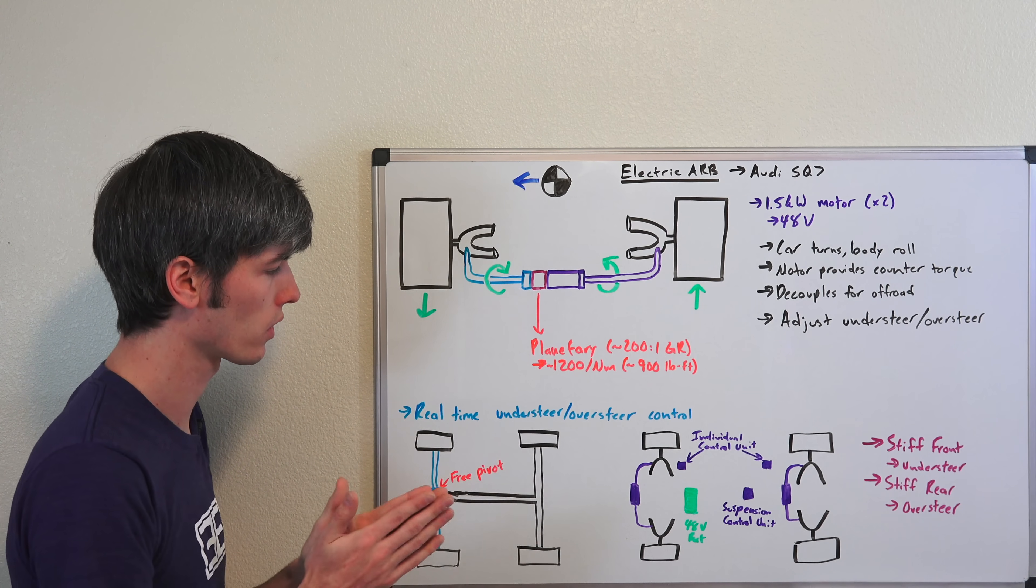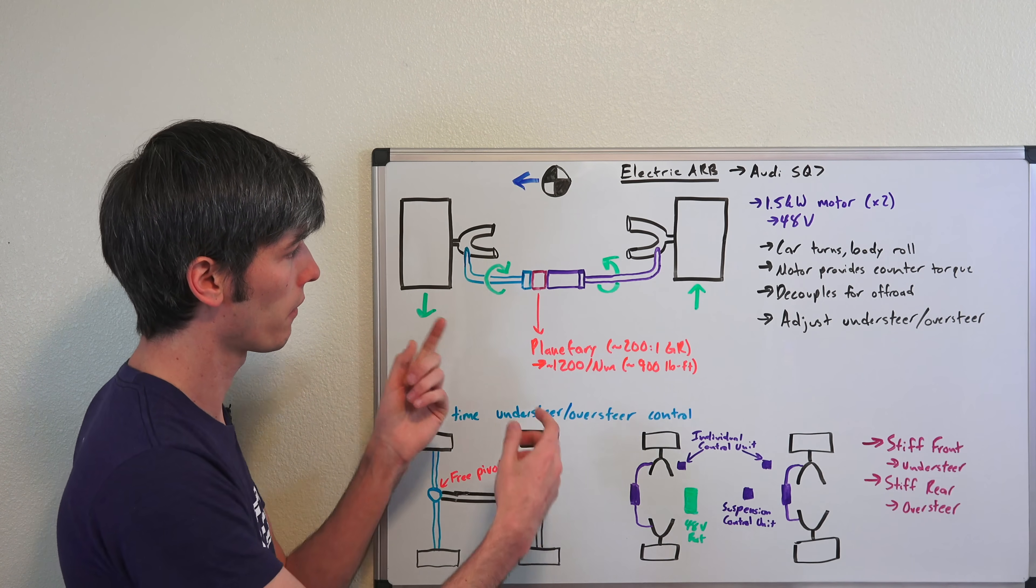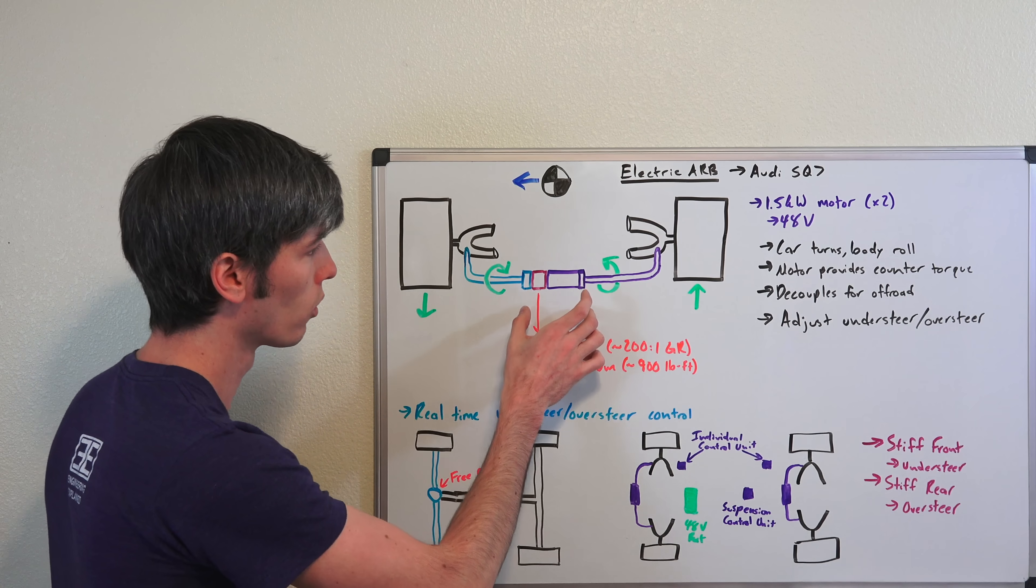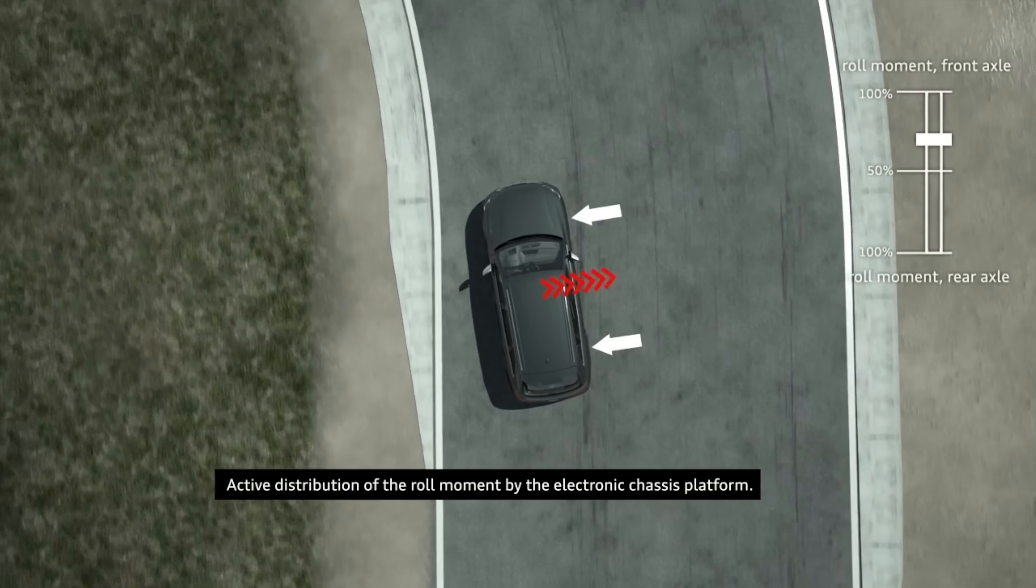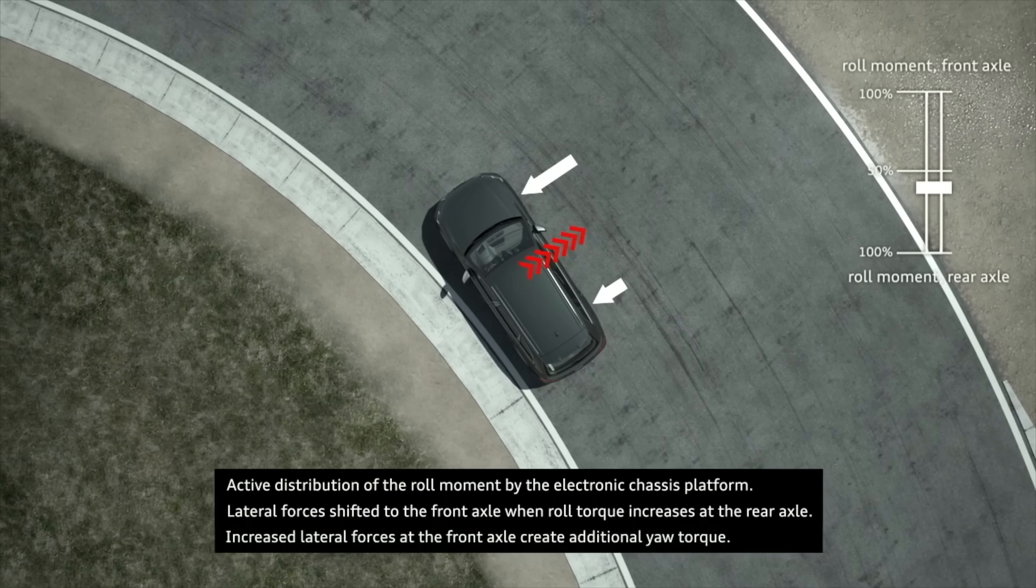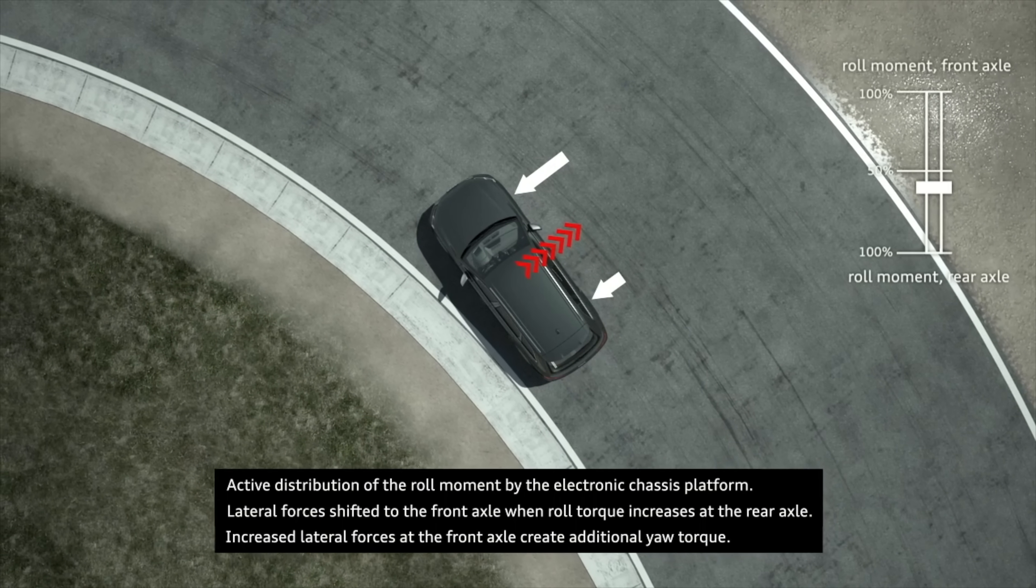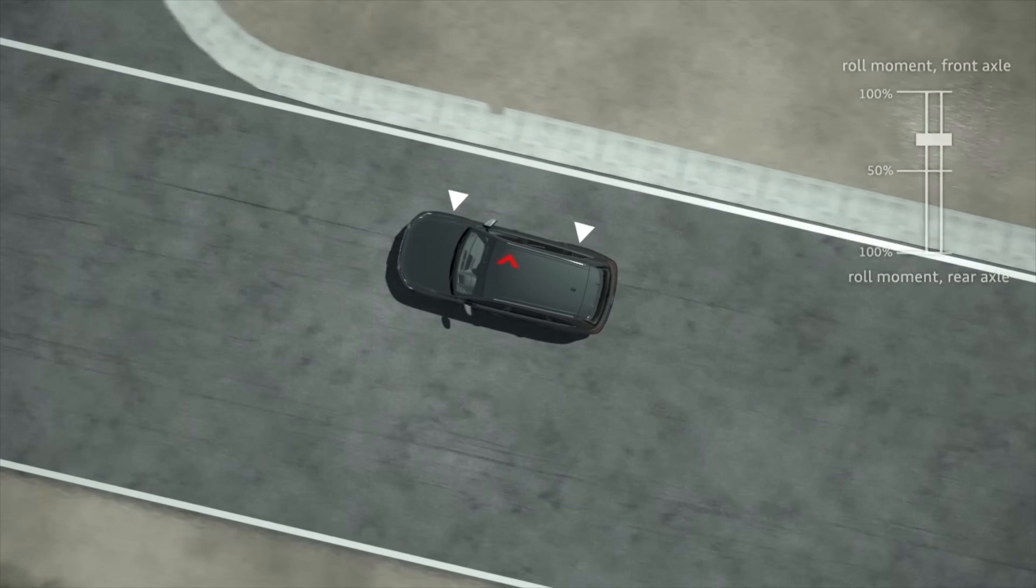In real time, based on the fact that you can change the roll stiffness of the front and rear axles, you can adjust the balance of the vehicle as it's going around a corner. You can make it want to oversteer, you can make it want to understeer, or ideally you can keep it very neutrally handling so it goes around that corner without getting squirmy or unpredictable. It does what you want and allows you to go around with maximum speed.